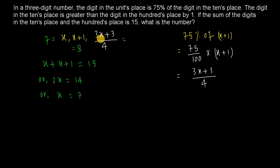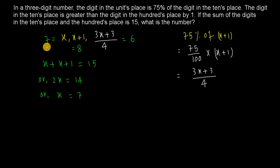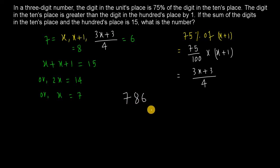Now, using the condition that the sum of the tens and hundreds digits equals 15: x + (x + 1) = 15, so x = 7. Then 3 into 7 is 21, 21 plus 3 is 24, 24 by 4 is 6. So the hundreds digit is 8, the tens digit is 8, and the units digit is 6. Therefore the number is 786.